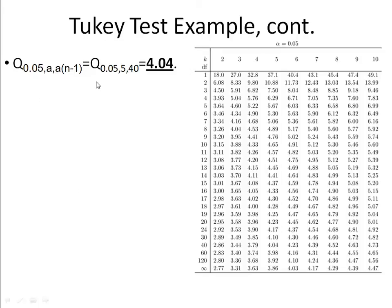So, the first step is to find our Q value. This table on the right is a Q-table for an alpha of 0.05. And so, the way it works is we use an A of 5 because that's the number of groups that we're looking at, and degrees of freedom for the error is the first column here. So, we go over to 5, which is the number of groups, and then down to 40, so it's 5, 40, and we find that the Q value we need is 4.04.